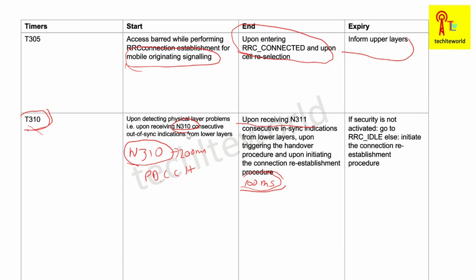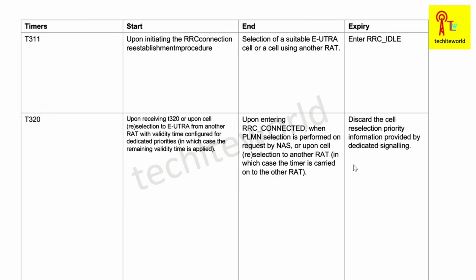Upon expiry of T310: if security has not been activated, the UE goes to RRC Idle; otherwise, it initiates the RRC Connection Re-establishment procedure.